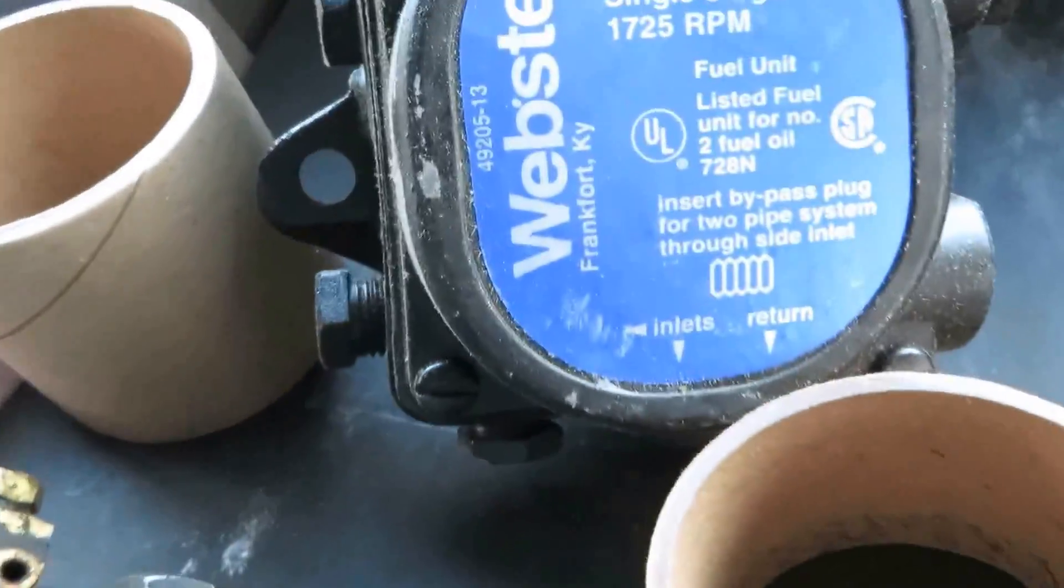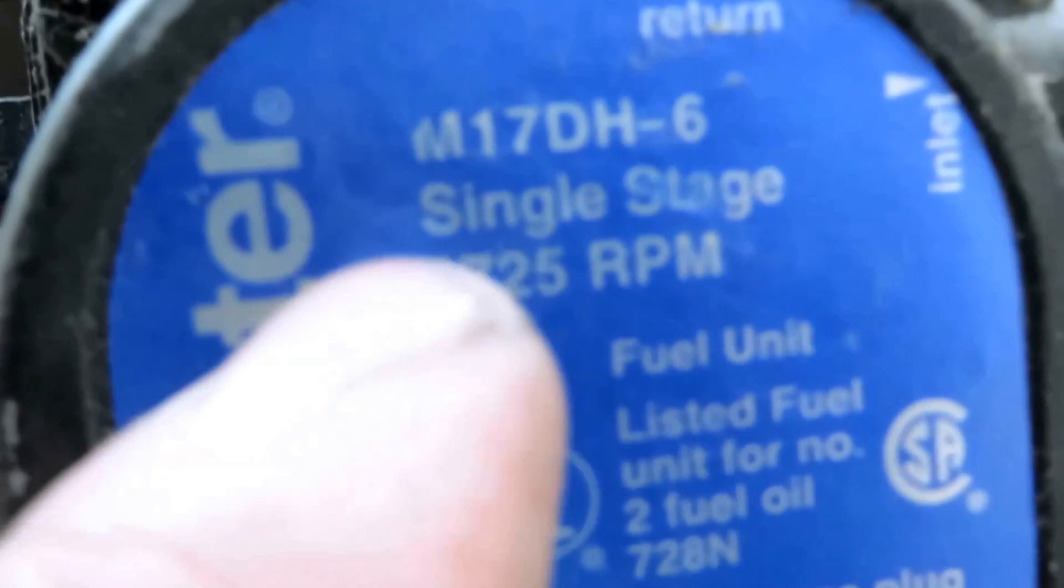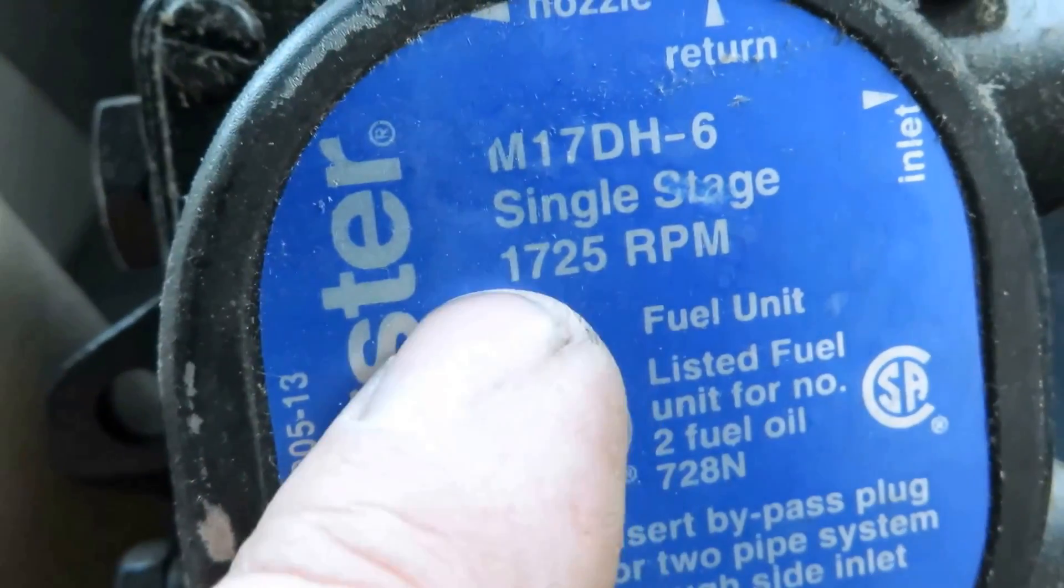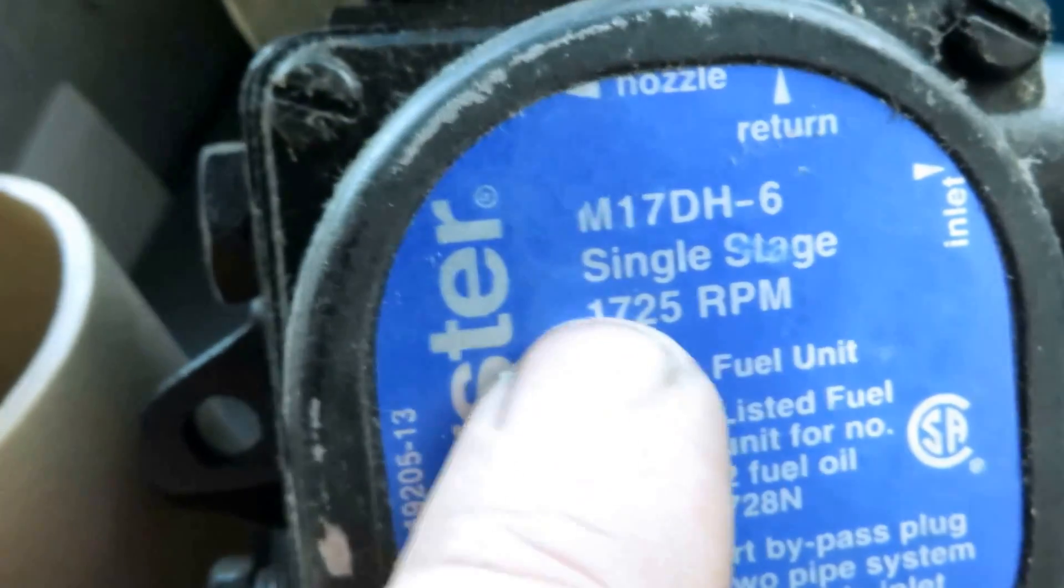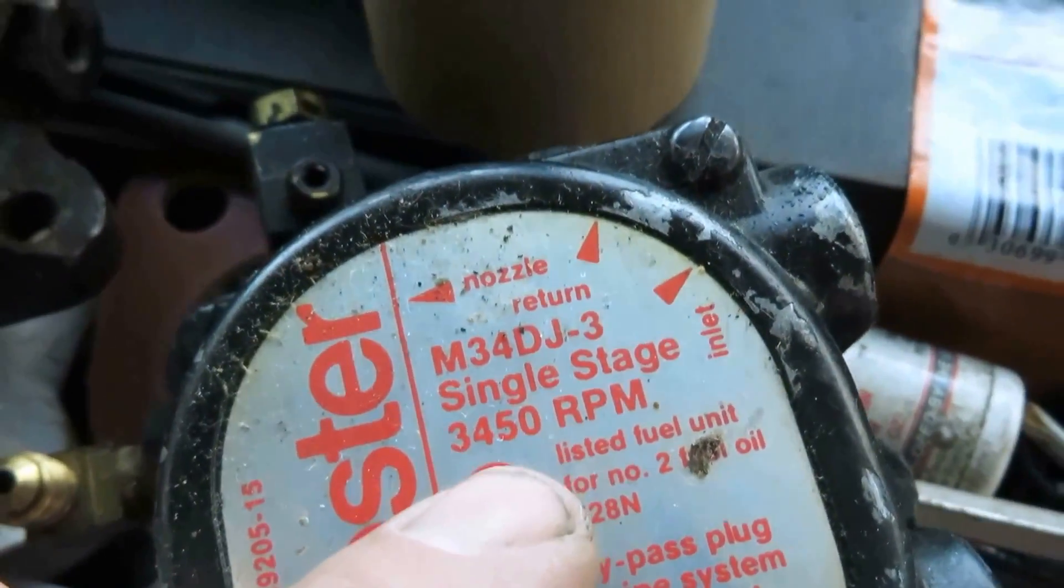Alright guys, there's some Webster pumps here. See this is a 1725. This is an older style one. Different RPMs. An older pump. Some of the old ones are slower RPMs. There's a couple of more. 3450 RPMs.